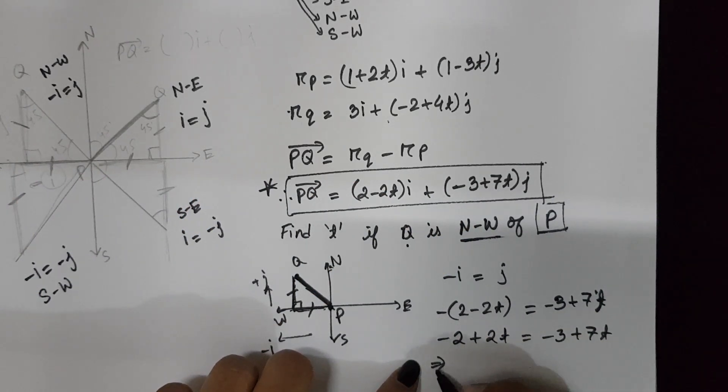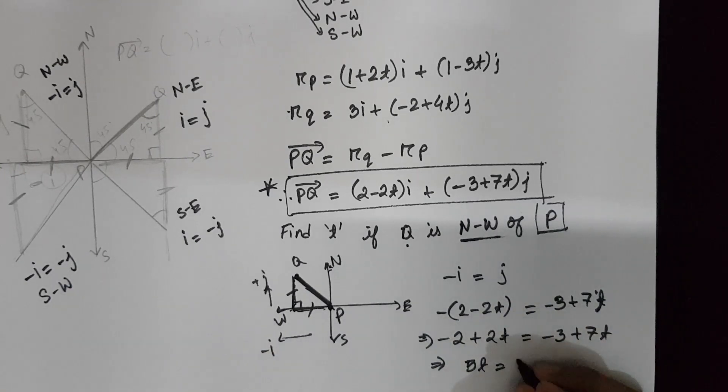That's how 5T equals 1. Here T equals to 1 by 5.